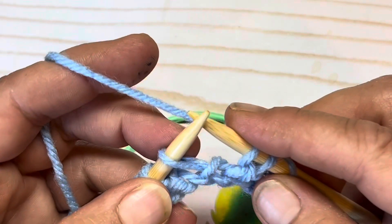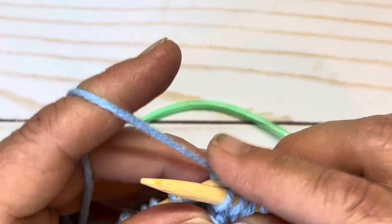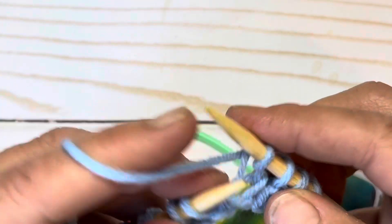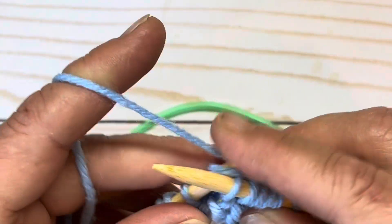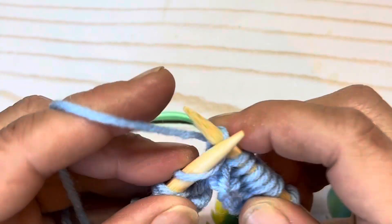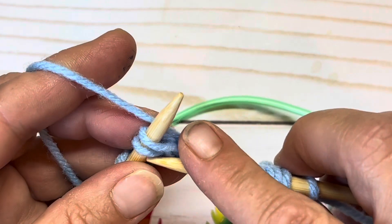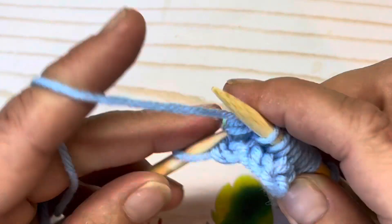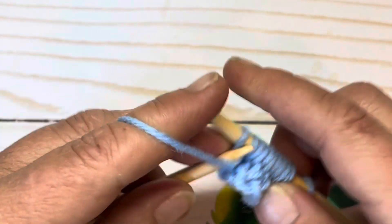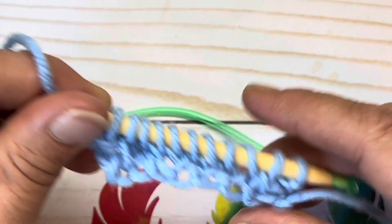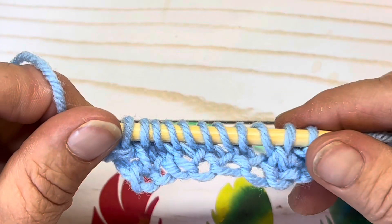Now you're going to yarn over and knit one three times. That was one, two, and three. Yarn over, knit two together, and purl one. Now we started with nine stitches and currently have 11 stitches.